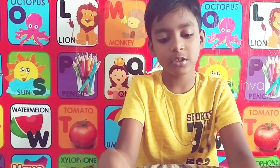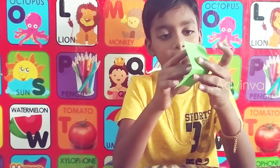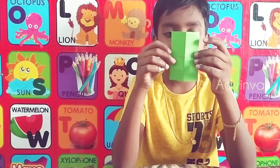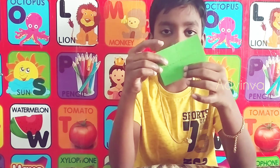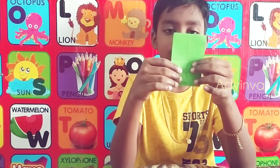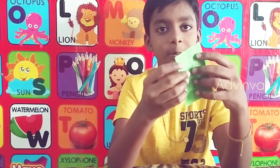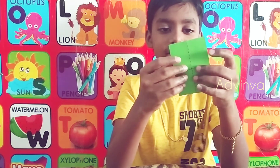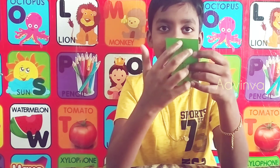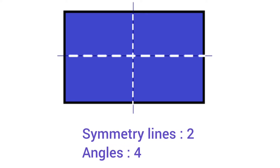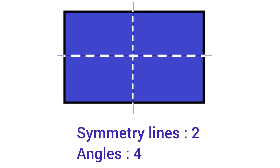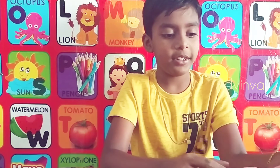Now for the rectangle, the symmetrical lines are: one, and then two — so the rectangle has two symmetry lines.